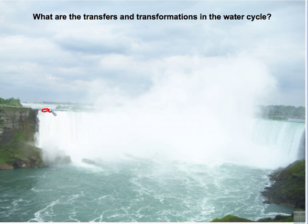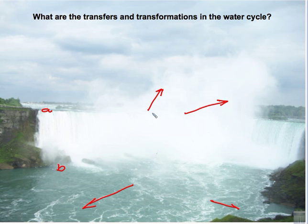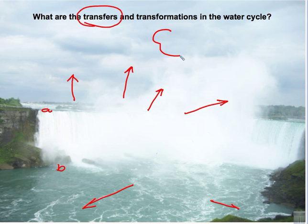In relation to the water cycle in this picture: as the water flows from the top part to the bottom part, and as some of the mists from the plunging water get scattered in all directions, all of that is no more than a transfer. As the sun's energy beats down on the liquid water and it evaporates, going up into the atmosphere and forming clouds of water vapor, then that is an example of a transformation.